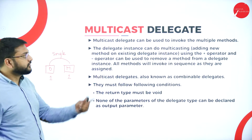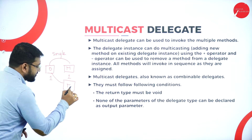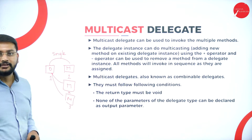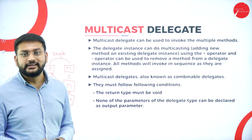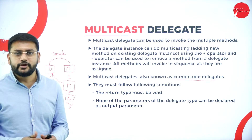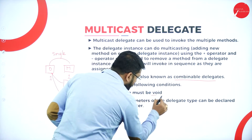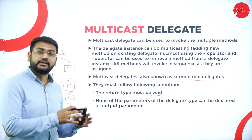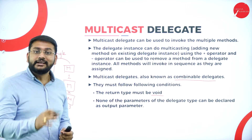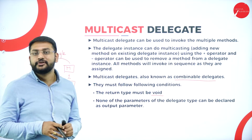Now, what is the concept of multicast? One object is referring to multiple methods — that is what we call a multicast delegate. We also call this a combinable delegate. Most importantly, when it comes to the multicast delegate, the return type must be void. You cannot use int — you should print the value inside that particular method itself.